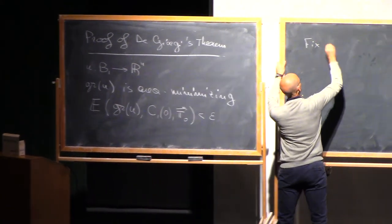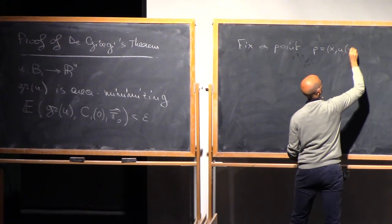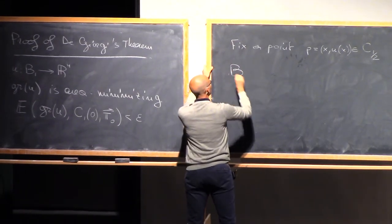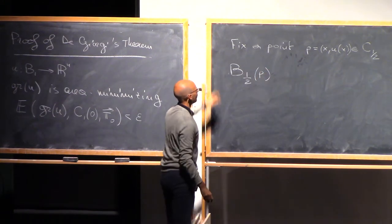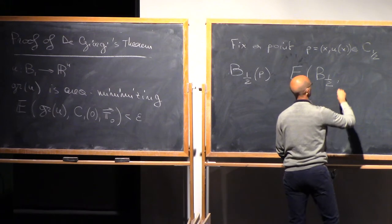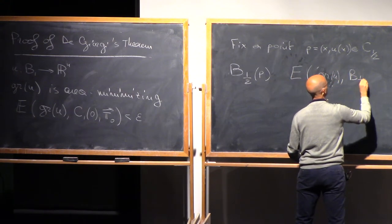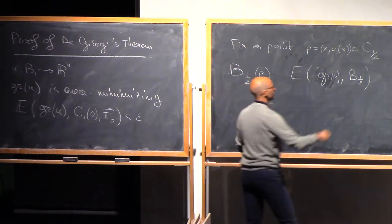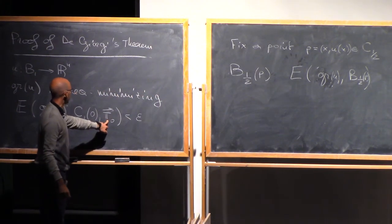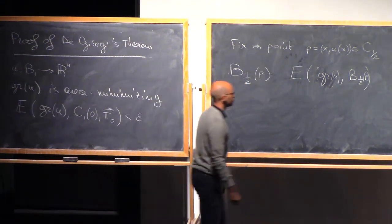Fix a point p equal to (x, u(x)) inside the cylinder of radius one-half, and pick a ball of radius one-half centered on this point. Compute the excess in the ball of radius one-half of the graph of u. Since the ball of radius one-half centered at p is contained in the cylinder, when I compute the excess with respect to the horizontal plane, I get only a factor times epsilon, because this excess has a normalizing factor. When I minimize over all planes, I get something less than a constant times epsilon.